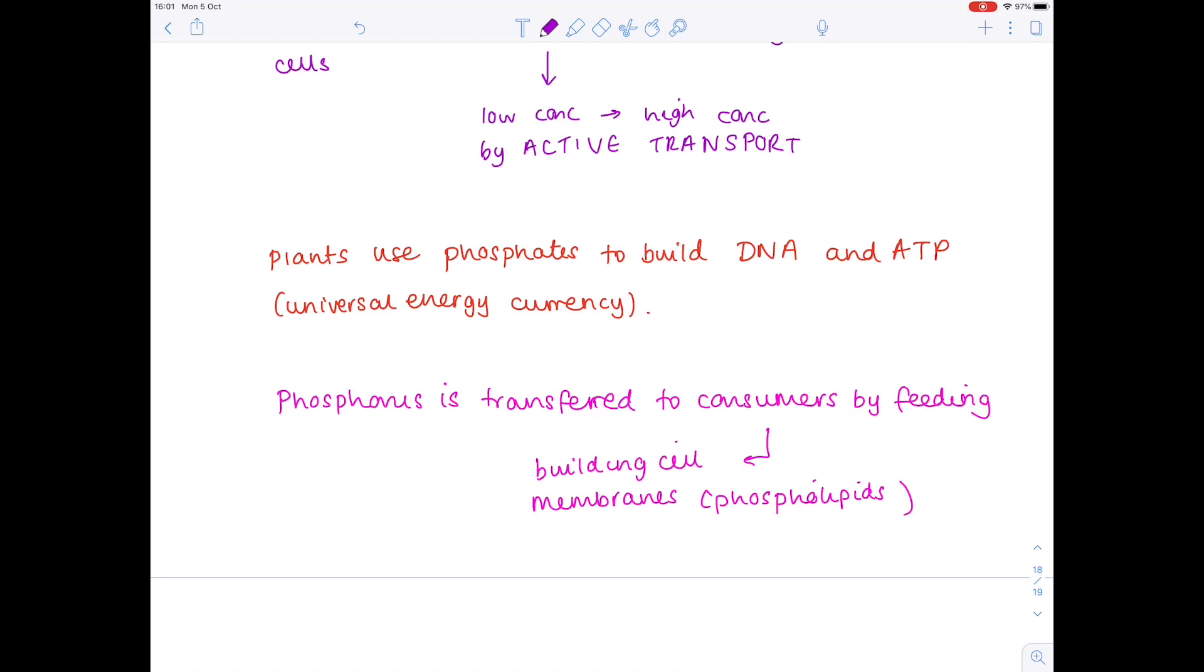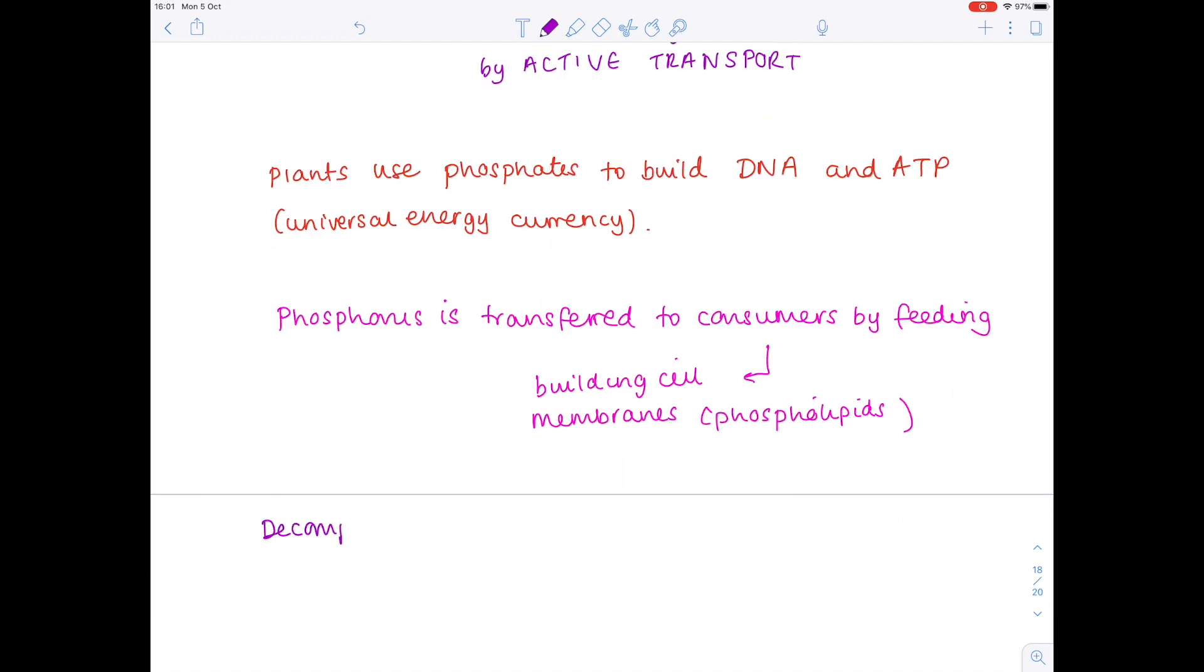So, how is the phosphorus inside these consumers and producers returned to the ground? Well, that's by the action of decomposers. And that obviously occurs once the plants and animals die.